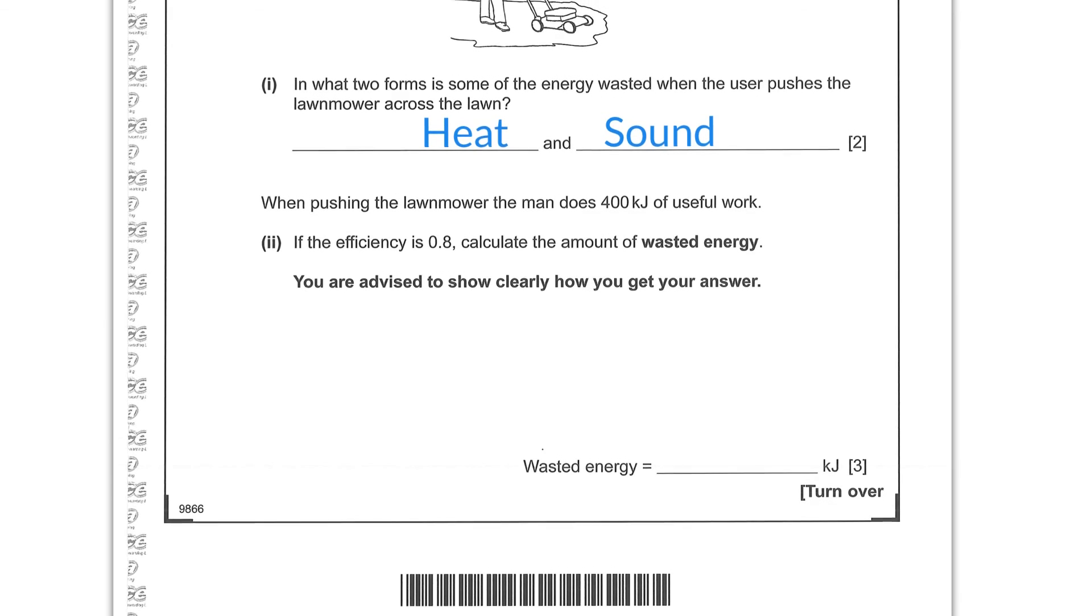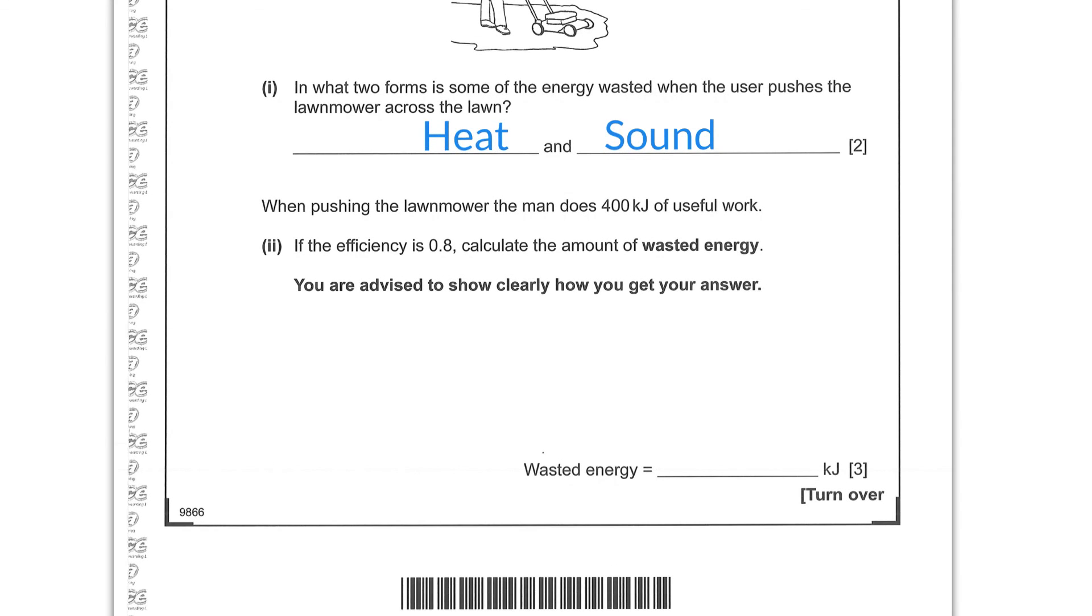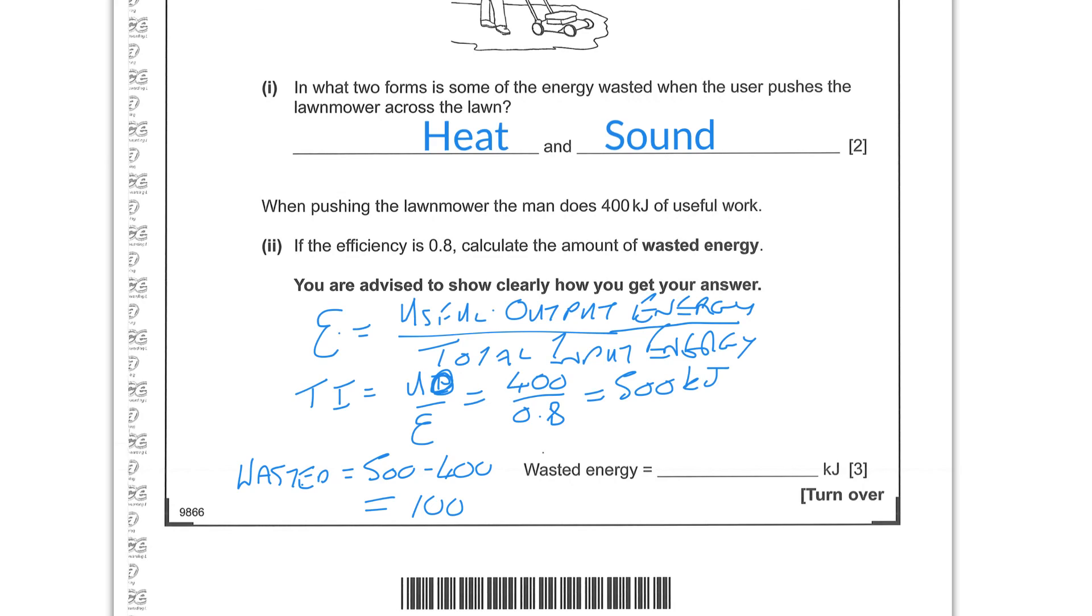When pushing the lawnmower, the man does 400 kilojoules of useful work. If the efficiency is 0.8, calculate the amount of wasted energy. You're advised to show clearly how you get your answer. So efficiency is useful output energy over total input energy. Total input then is going to be useful output over efficiency. So 400 over 0.8, which gives us 500 kilojoules. And so the wasted is going to be the difference between those. 500 minus 400 gives us 100 kilojoules. And that's our final answer.